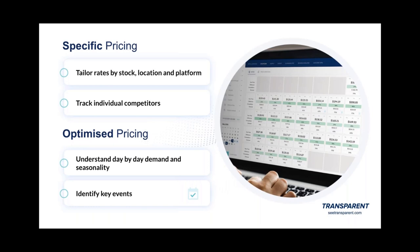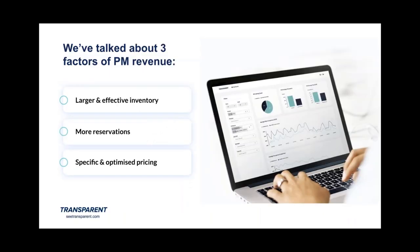Moving into optimized pricing — this is about being sensitive to day-to-day pricing fluctuations. You need to understand the prices people are willing to pay and when, in order to get ahead of your competitors. Only PMs with access to market intelligence are able to react to demand so quickly. Understanding seasonality throughout the year enables you to set a solid base price, and our dashboard flags key events throughout the year in your market to notify you of spikes in demand.